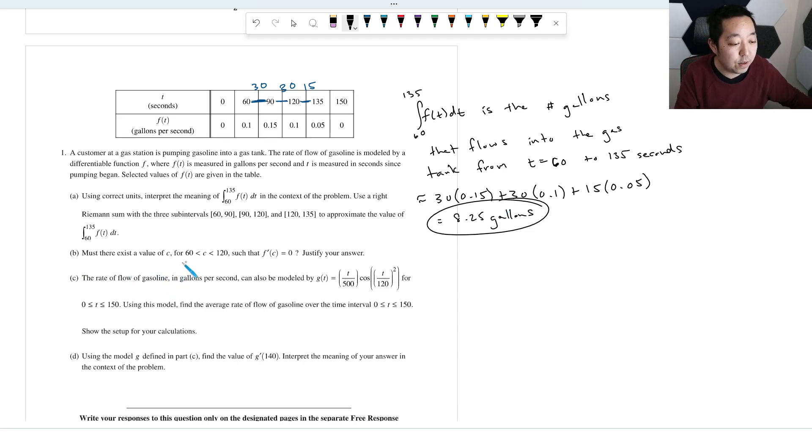Must there exist a value of C such that F prime of C is equal to 0? So this is asking about the derivative of this function. Must that value—is this the intermediate value or mean value theorem? In this case, because I'm asking you the derivative is 0, that's saying that I want, you know, for mean value theorem, it's where you want the derivative is equal to F(B) minus F(A) over B minus A. So that's probably what we're going to do because it's about the derivative as opposed to the original function.